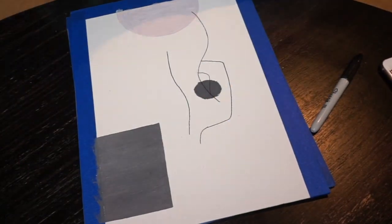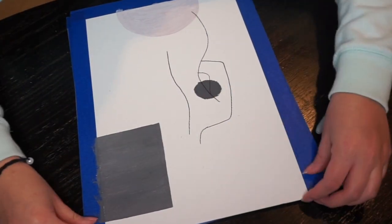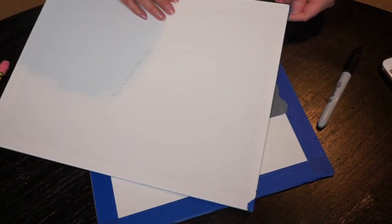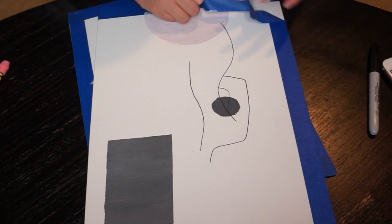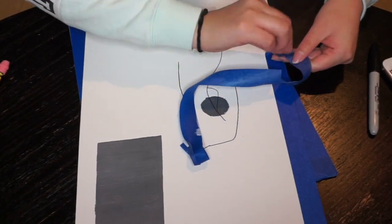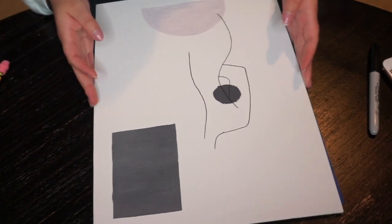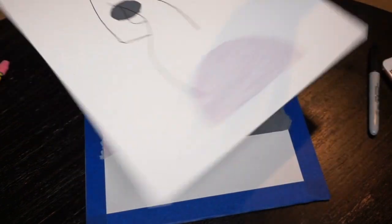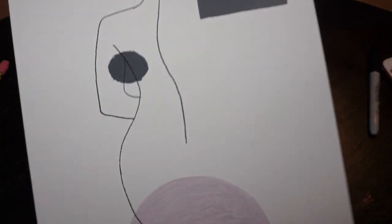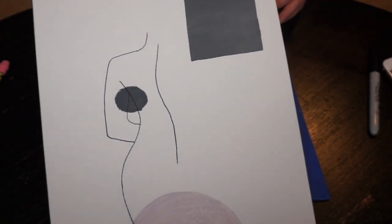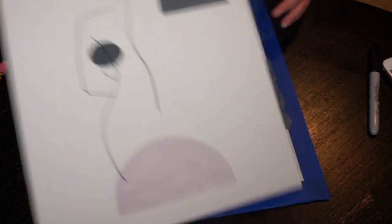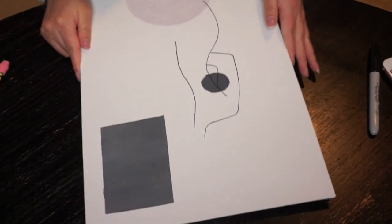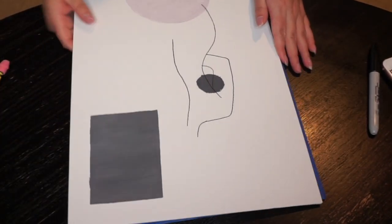And then we are going to remove our painter's tape. This is what it looks like. It is so pretty, you guys. I love it. And we are going to do a different line art on the second one.